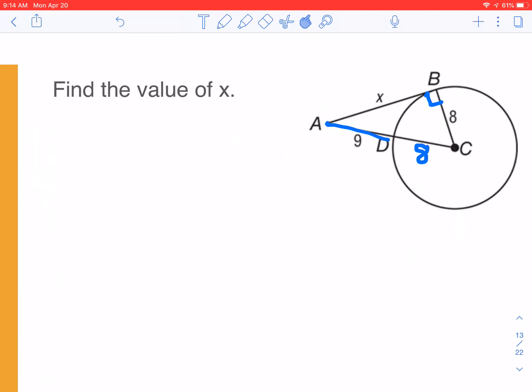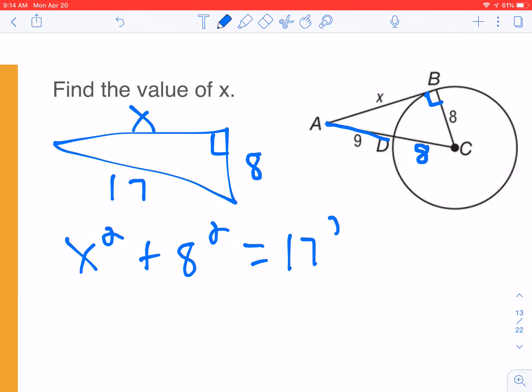So I'm going to redraw this triangle. So I have x, I have 8, and I have 17, 9 plus 8. I'm going to set up Pythagorean theorem. x squared plus 8 squared equals 17 squared. If you know your Pythagorean triples, you know that x will equal 15. Go ahead and solve that on your own with a calculator just to double check. But that's how you do that version.